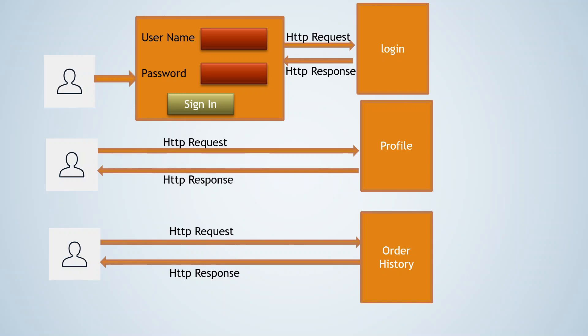In order to show user-specific information from the server to the client, the server has to know the user ID. So whenever users try to access user-specific pages, the server will serve a sign-in form. Once they provide their username and password, the server fetches the user-specific details and serves the profile, order history, or payment details pages. Upon successful authentication, the server won't ask for credentials again.